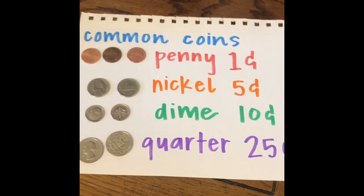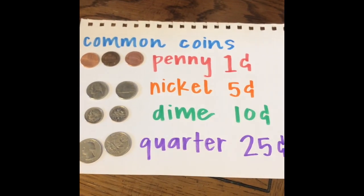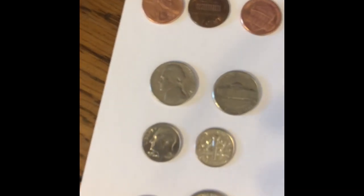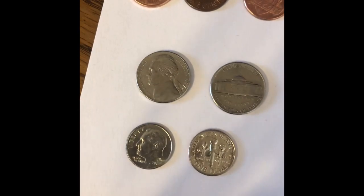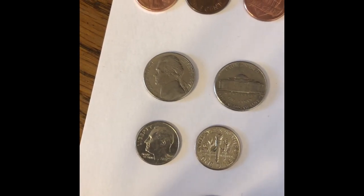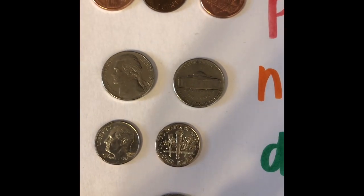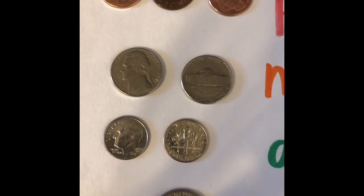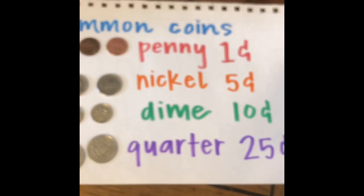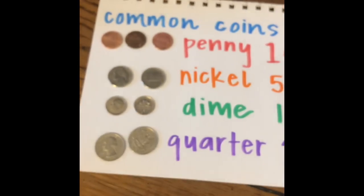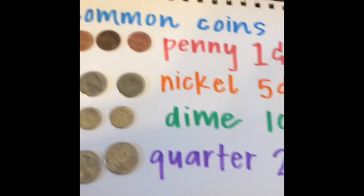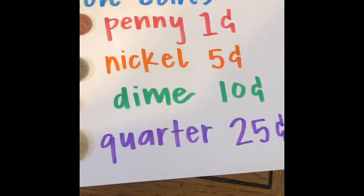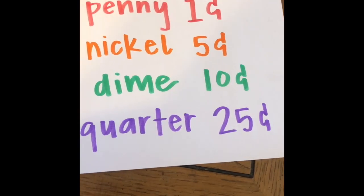Our dime is worth 10 cents — 10 times the amount of a penny or twice the amount of a nickel — and we need 10 dimes to make a dollar. On the front of our dime we have FDR, Franklin Delano Roosevelt, our 32nd president. On the back we have a torch, an olive branch, and an oak branch. Our dime is the smallest coin but certainly not the least valuable, since it's worth 10 cents.